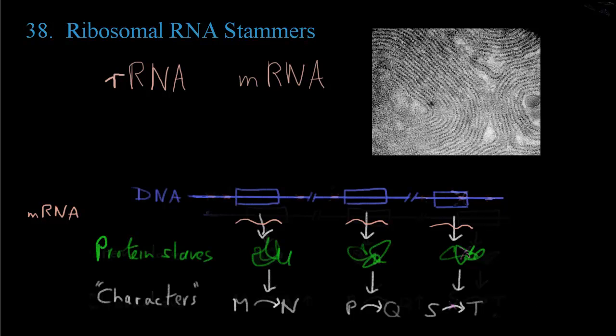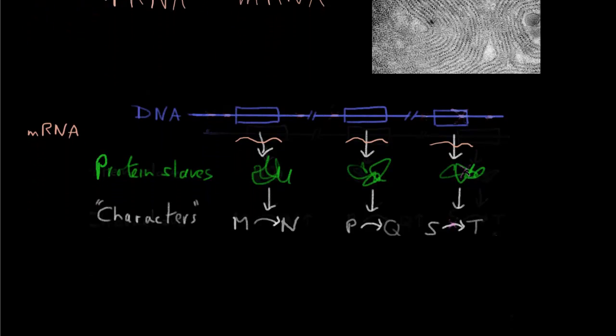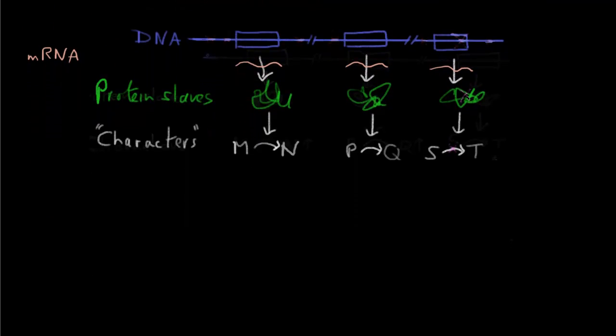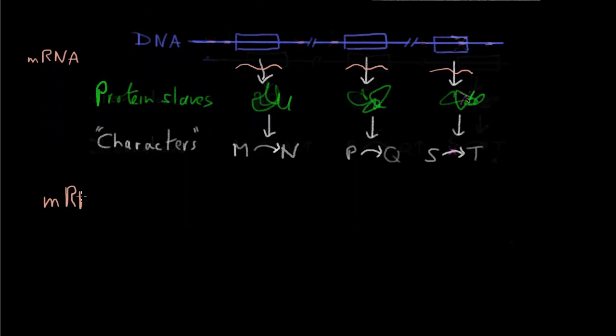So we have messenger RNA and ribosomal RNA. Messenger RNA works more by virtue of its sequence than by virtue of its structure, whereas ribosomal RNA works more by virtue of its structure.